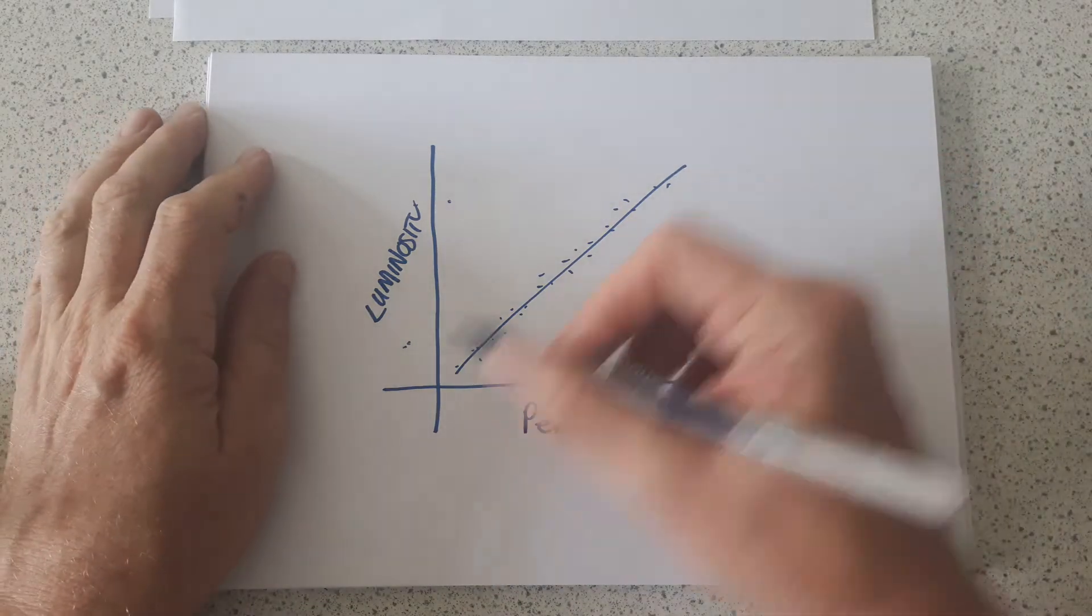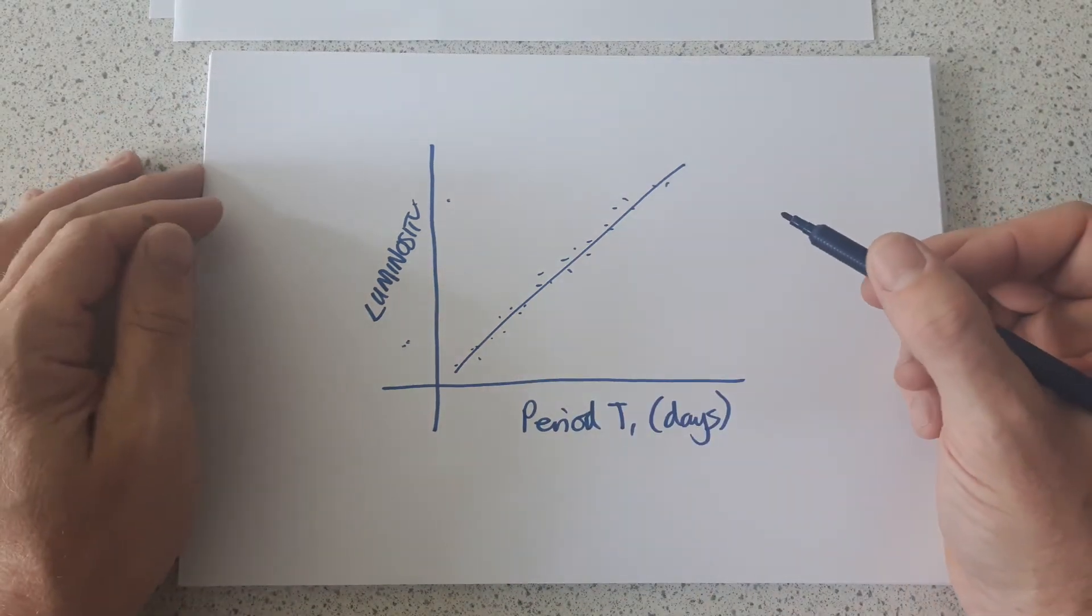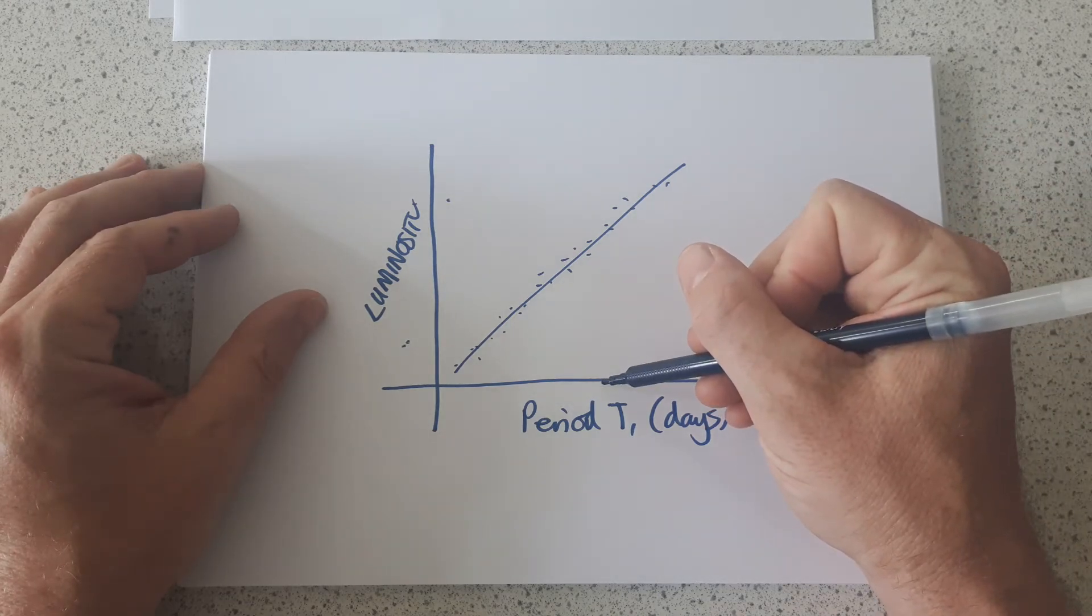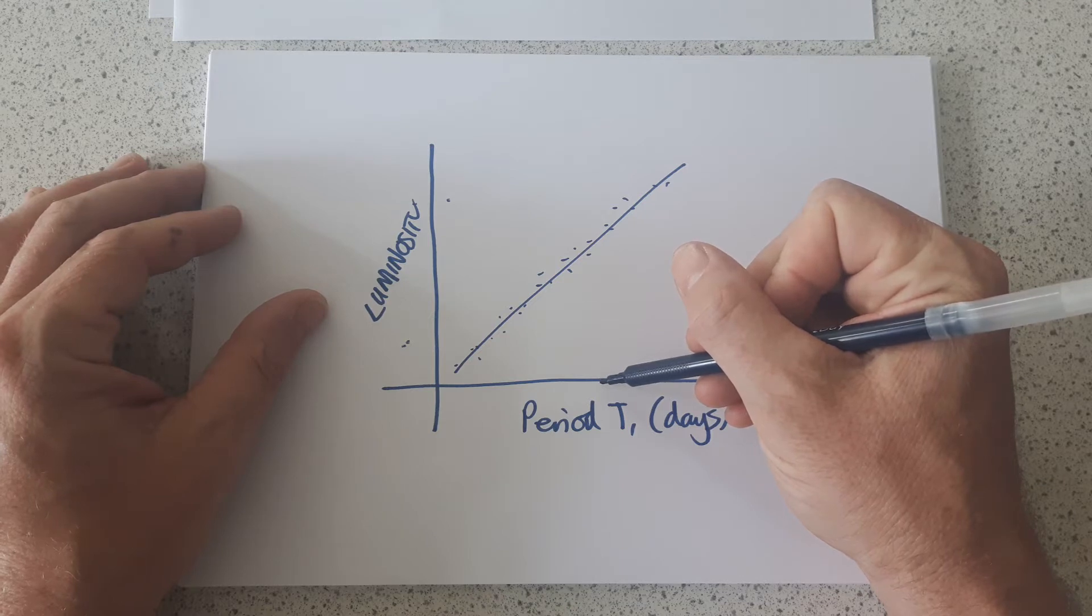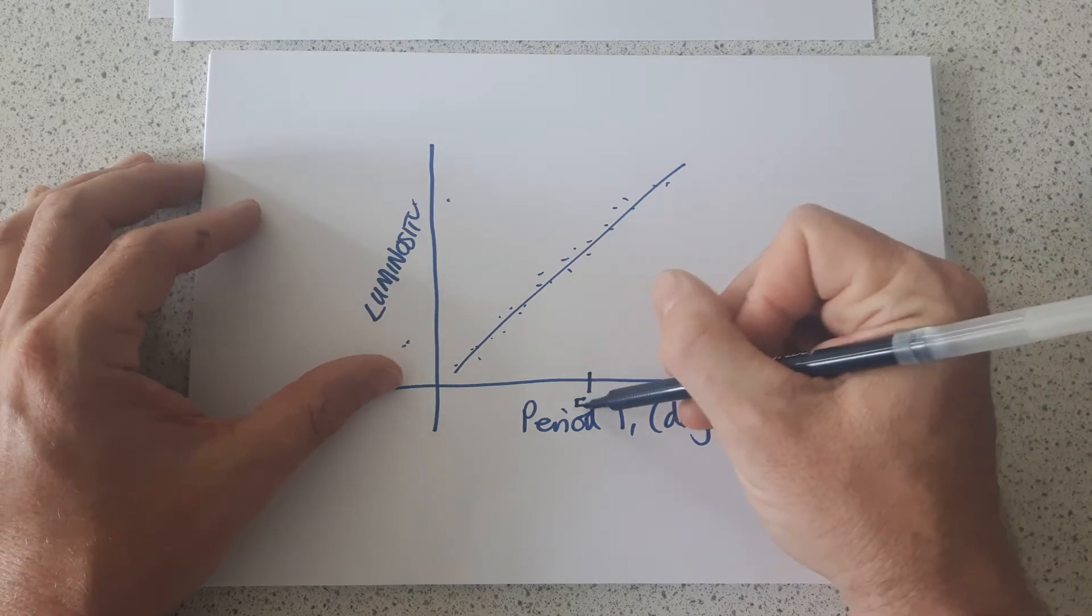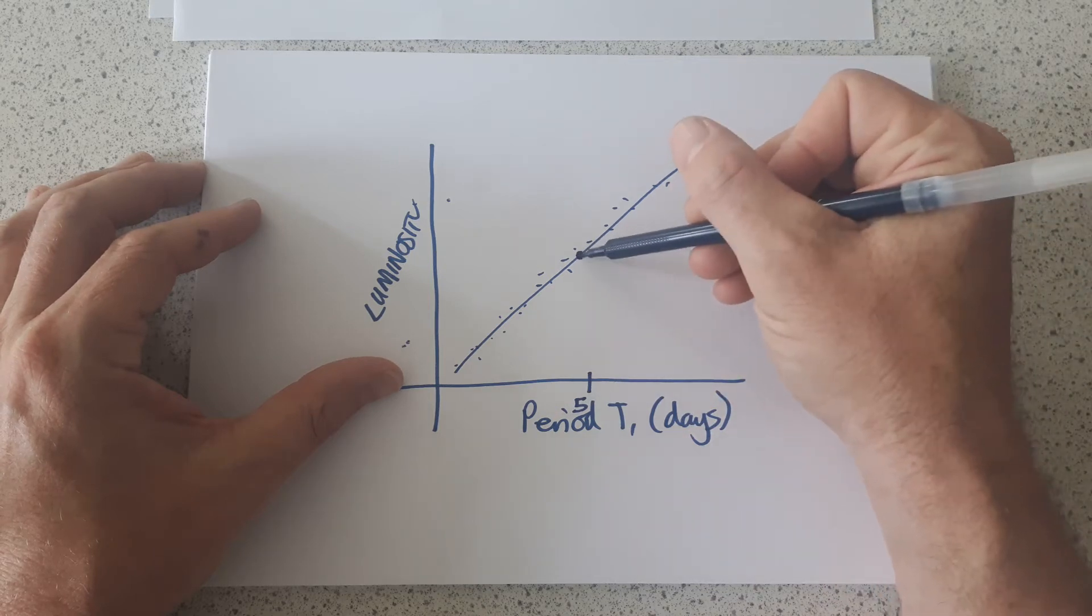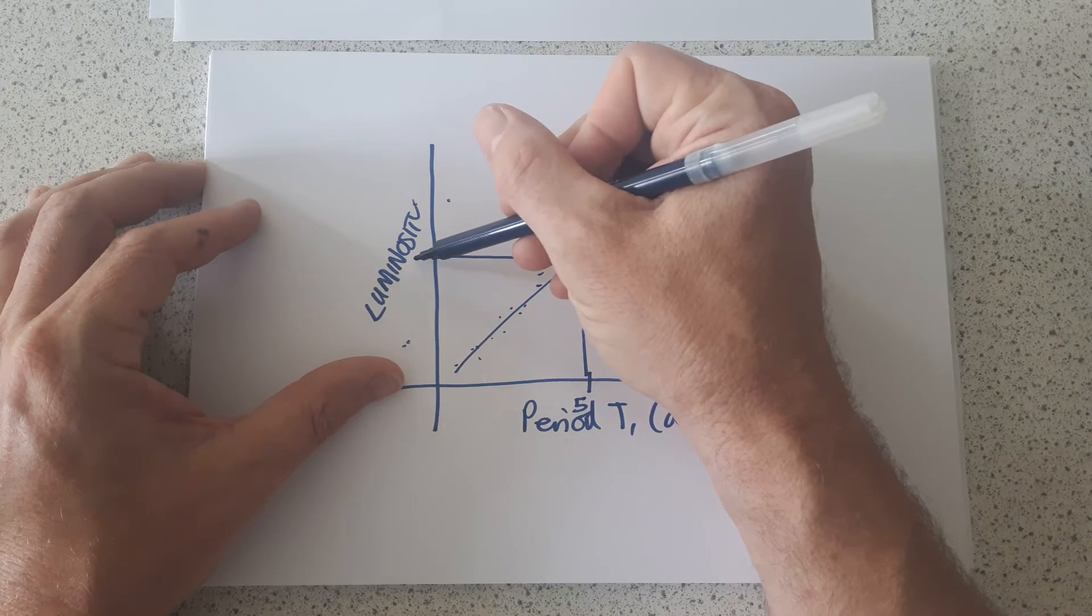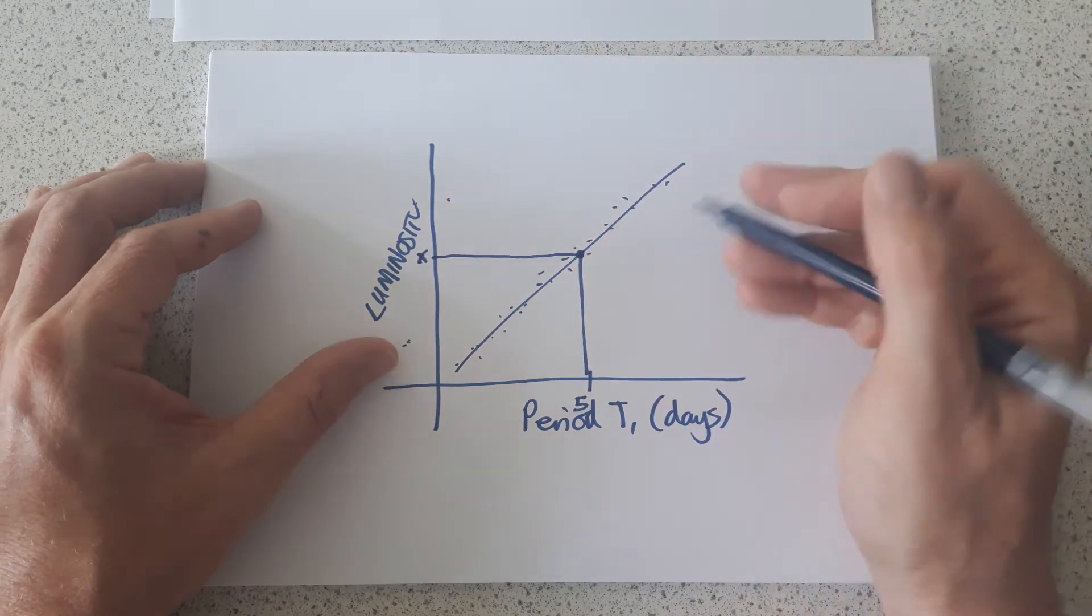What this piece of data meant essentially was that if you could find a Cepheid variable star and measure its period of brightening and dimming, and let's say it was five days, you could then go up to the graph and read across from the graph to find the luminosity of the star.